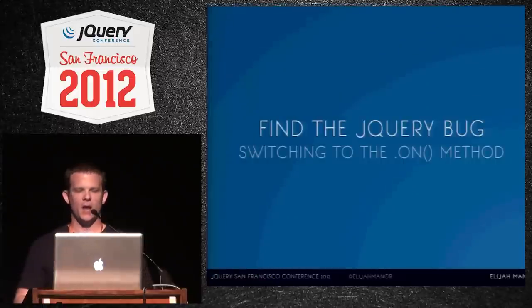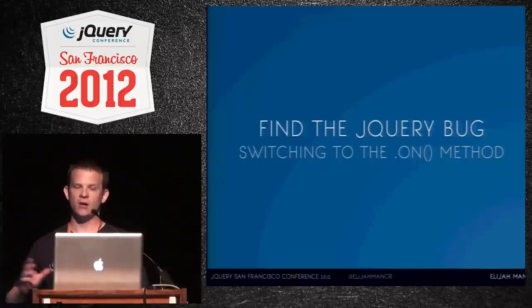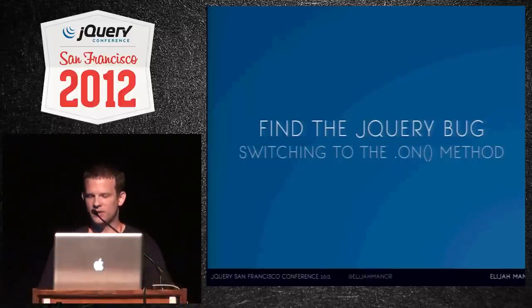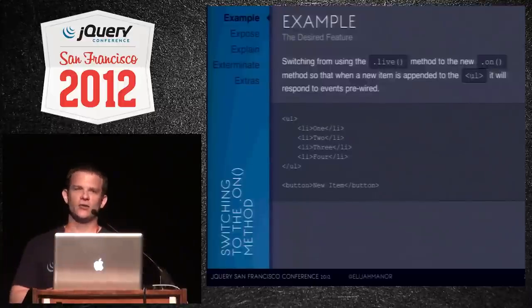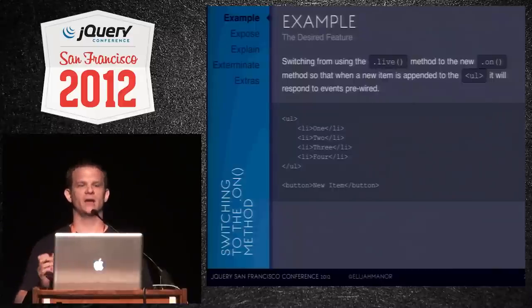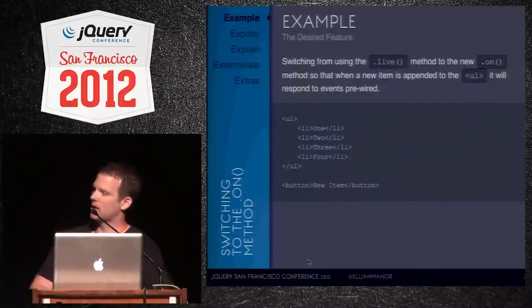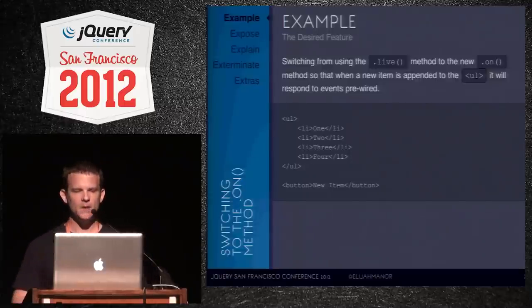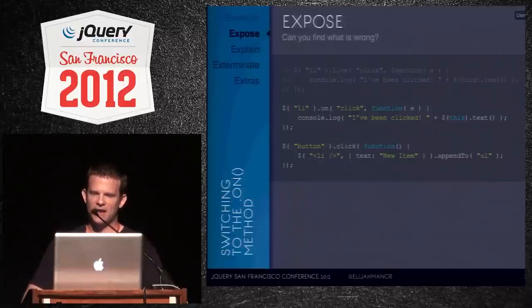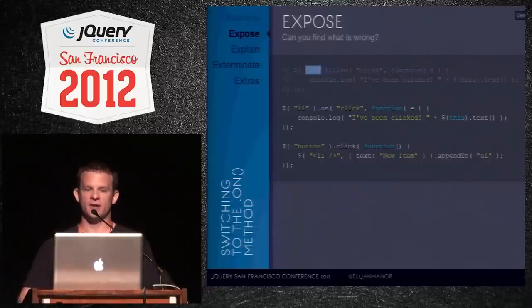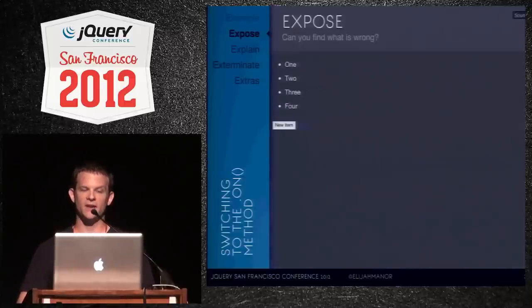I wrote a blog post about the difference between bind, live, delegate, and on. People say they switched from live — which is deprecated — to on, and it broke everything. Here's why: they had code grabbing all list items using .live('click', ...). They simply replaced live with on, but now newly added items don't respond to clicks. The old items work, but after adding a new item, clicking it does nothing.